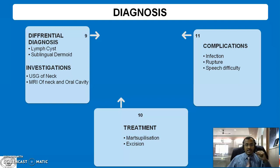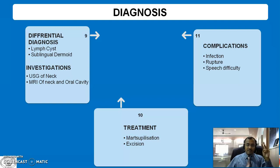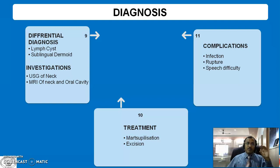Let us summarize. Ranula is a cystic swelling located in the oral cavity at the floor of the mouth. It has a soft, cystic appearance, bluish in color, with transillumination test positive and fluctuation test positive. There are two types: simple and plunging ranula. It is absolutely a painless swelling, and one can treat this swelling with marsupialization and excision.